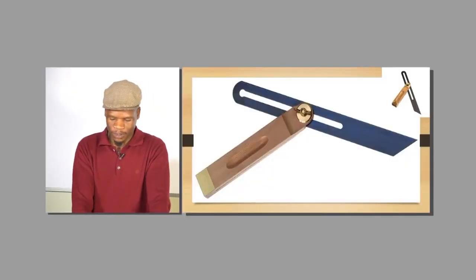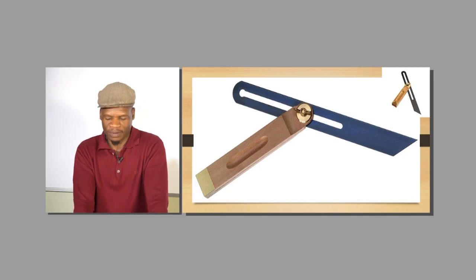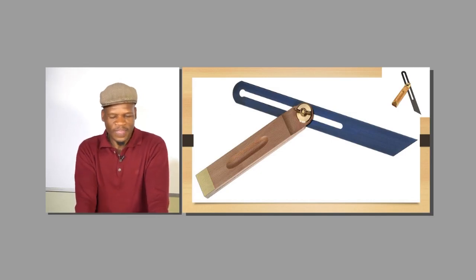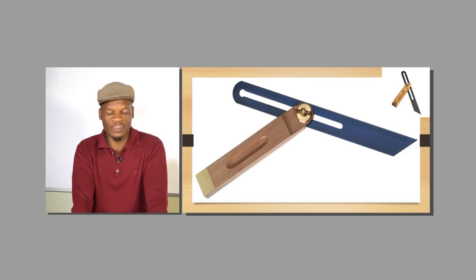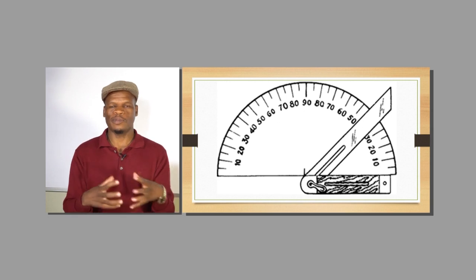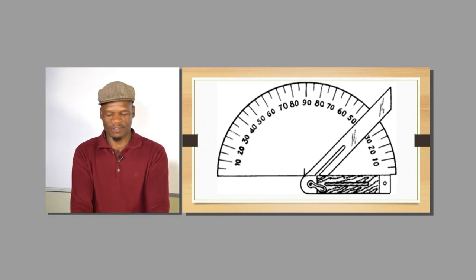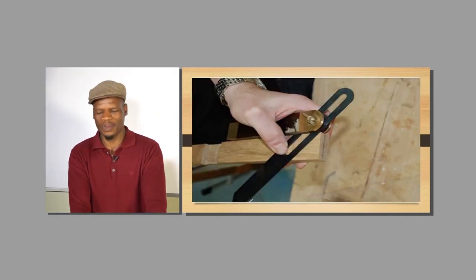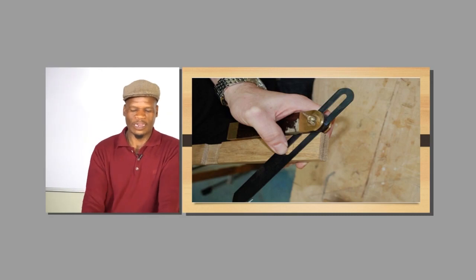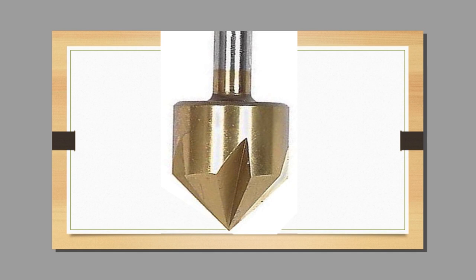You have got your bevel square, which is used to measure angles on roof trusses but can be used in different ways. It doesn't have any specific fixed angle — you use a protractor to determine the angle, lock it, and then transfer that measurement to different materials such as timber.